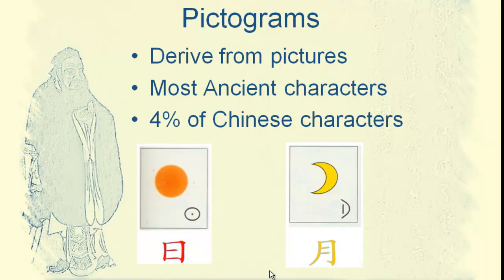There are two characters here. The first one is the sun. In Chinese, the pronunciation is 日. The second one is the moon. In Chinese, 月. As you have noticed, these two characters are basically derived from the pictures of the sun and the moon.